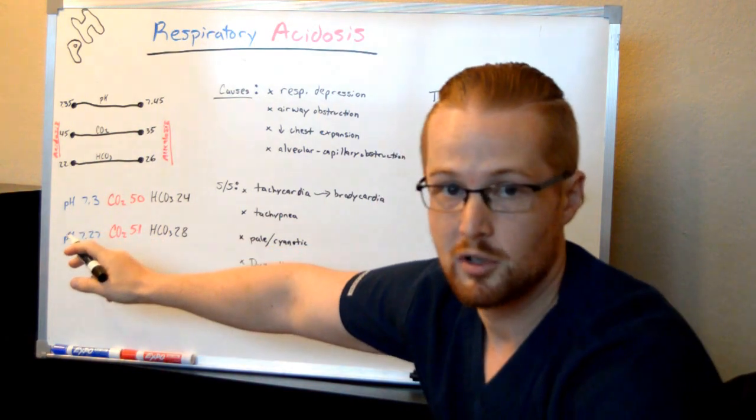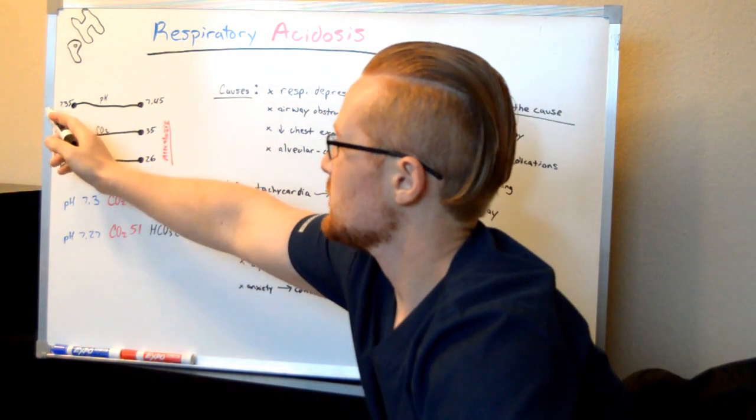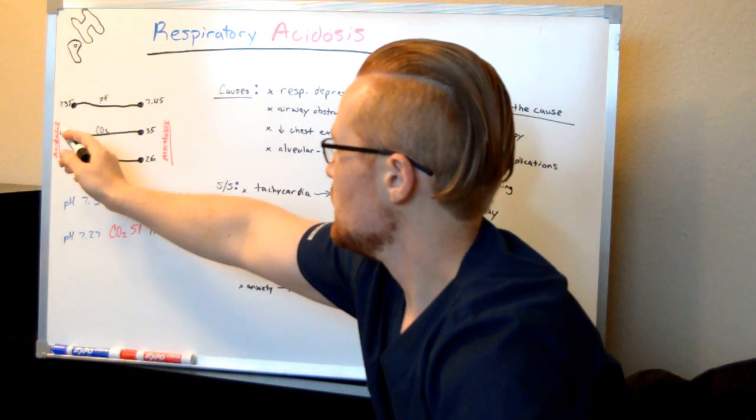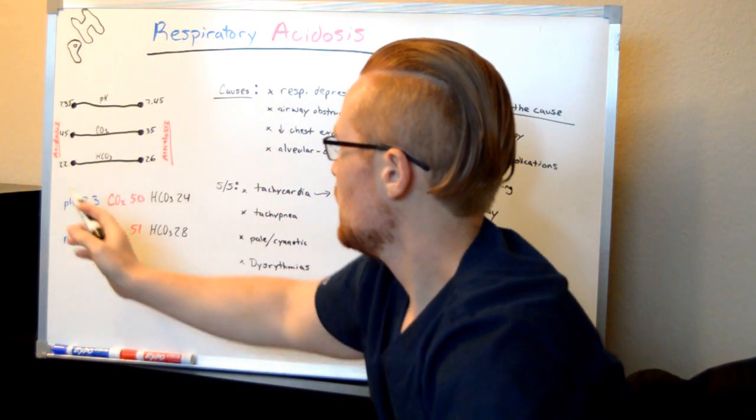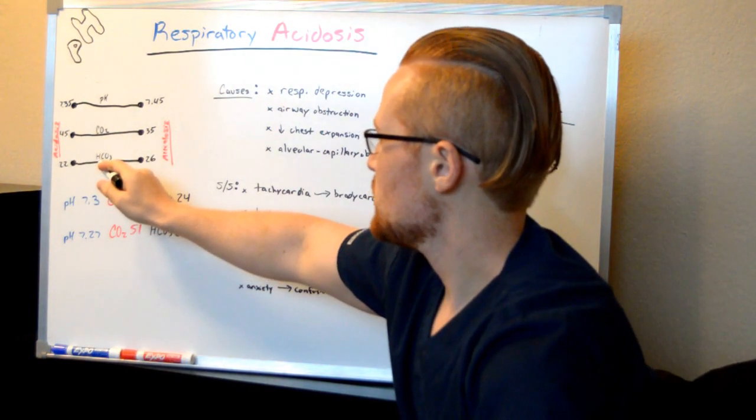In this case, the problem presented the patient with a pH of 7.3, so that's going to be on the acidic side. CO2 of 50, which is also on the acidic side. And a bicarb of 24, which is just kind of here in the normal limits.